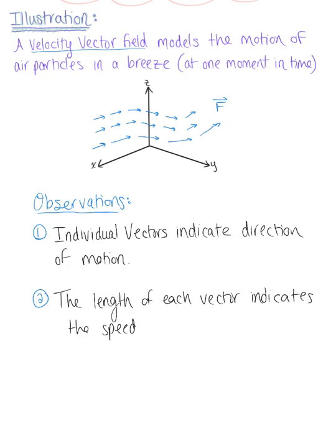Which makes sense to us, right, because length is equivalent to magnitude. And if we think way back to the beginning of Calc 3 when we were looking at vector calculus, we know that the magnitude of the tangent vector is equivalent to the speed of a velocity vector. So the length of each individual vector here indicates the speed, and the individual vectors indicate the direction of motion. So let's go ahead now and think about a formal definition for a vector field.